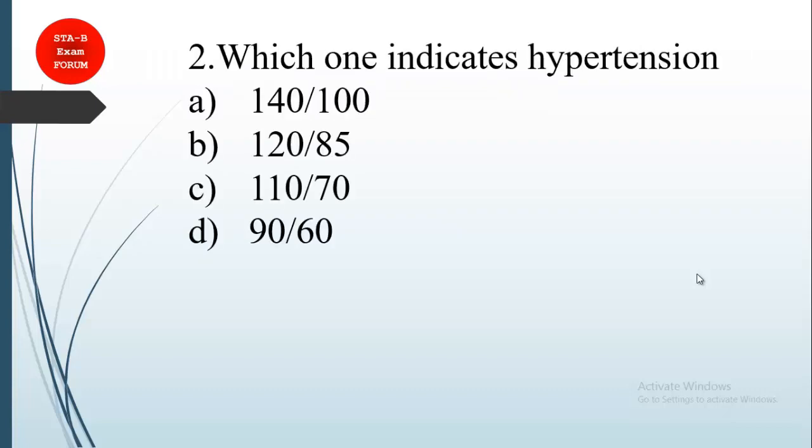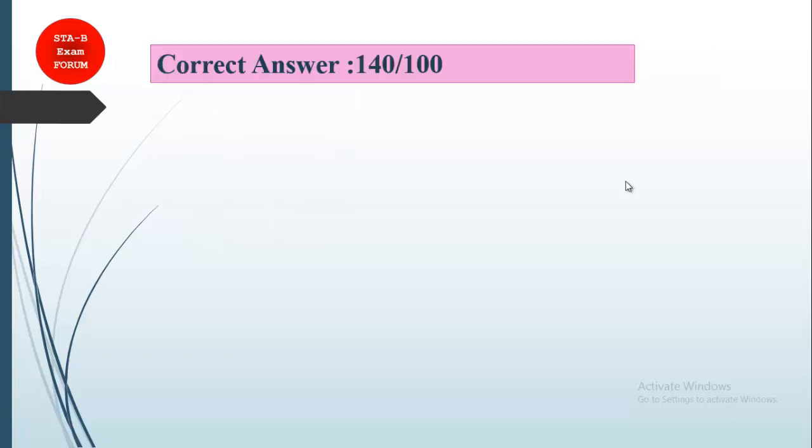Coming to the next question, which one indicates hypertension? We understand hypertension, but what is the correct figure for that? So you can see the normal one is 120 by 90, but here option A is only greater than 120. So option A, that is 140 by 100, is the correct answer.